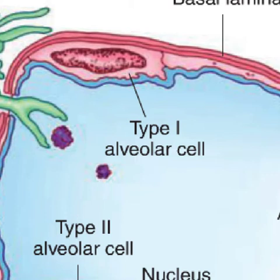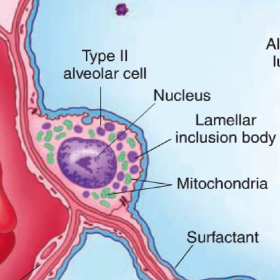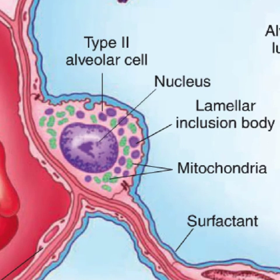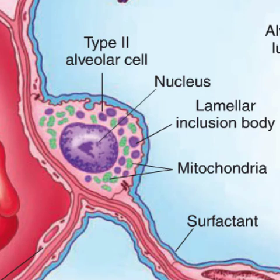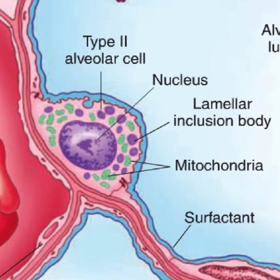On the other hand, we see type 2 alveolar cells, or type 2 pneumocytes, which are the other epithelial cells of the alveolus. These type 2 alveolar cells are cuboidal. They have a lot of mitochondria and are metabolically active. They secrete a substance called surfactant, which has a lot of lipids and works to prevent the alveoli from collapsing and shrinking during expiration.